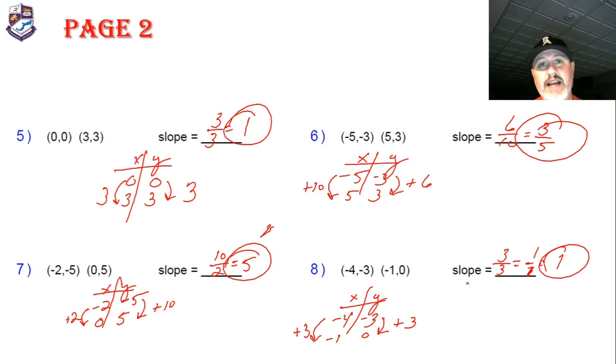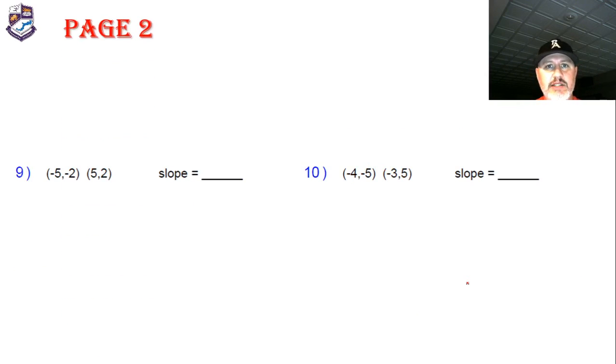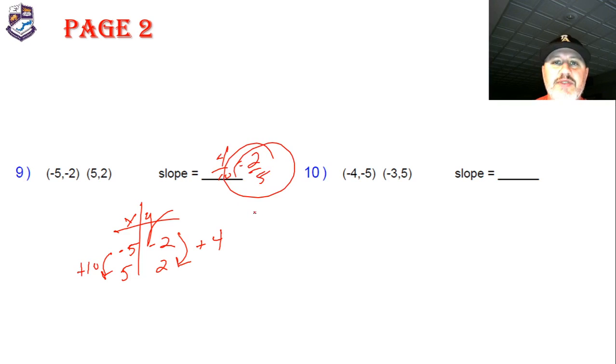Let's go on to the final problems. Here we go: negative 5 negative 2, and 5, 2. My rise I'm going up by 4, my run I'm going up by 10. 4 tenths simplifies to 2 fifths. That's a 2 fifths slope everybody.